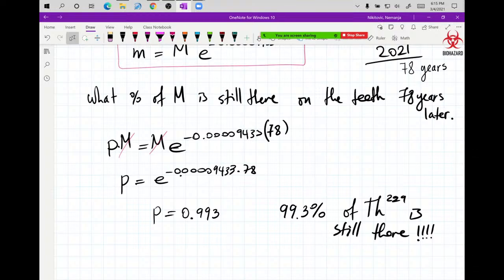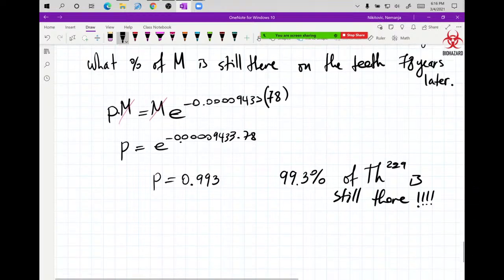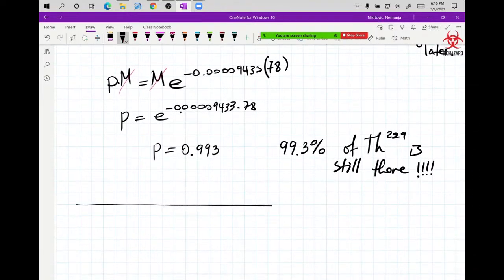99.3% of thorium is still there on their teeth. 78 years later, only 0.7% of that radioactive thorium of that toothpaste decayed. Only 0.7% in 78 years. That's crazy. It just makes you know how insignificant we are. Because 78 years, like for some people, that's a lifetime. They die when they're 78. So wow. And 99.3% still there.